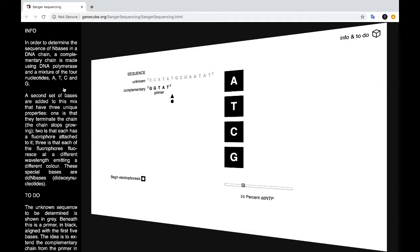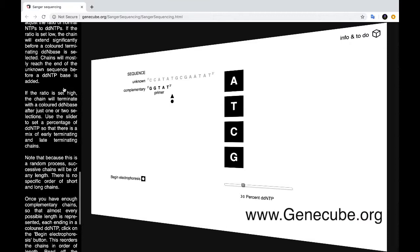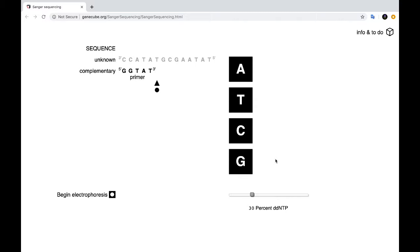So we can simulate Sanger sequencing using genecube.org. If you go to this site, you will find that there is a set of instructions down the side to indicate how to use the simulator. At the top, you will see the unknown DNA sequence. And this is the sequence we're trying to determine using the normal deoxyribonucleotides and the DDNTPs.